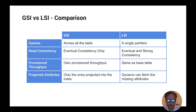For provisioned throughput, global indexes have their own provisioned throughput, so you have to pay for additional read and write capacity units for the global indexes. On the other hand, local indexes share the same read and write capacity with the base table.